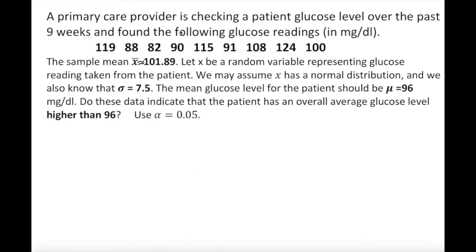We're checking a patient's glucose level over the first nine weeks. The sample mean is approximately 101.89 — found by adding all values and dividing by the number of observations. Let x be a random variable representing the glucose reading. We may assume x has a normal distribution. The population standard deviation is 7.5, and the mean glucose level for the population is equal to 96. The question is: does this data indicate the patient has an overall average glucose level higher than 96?